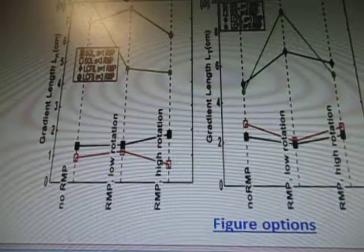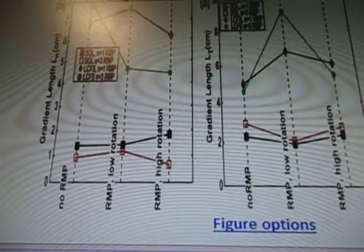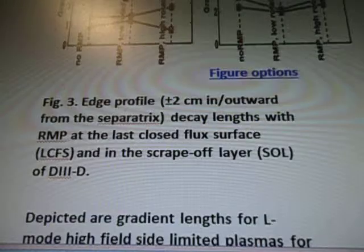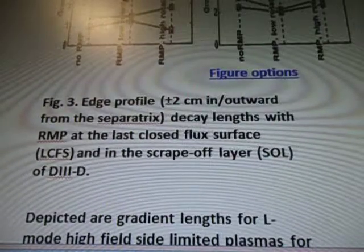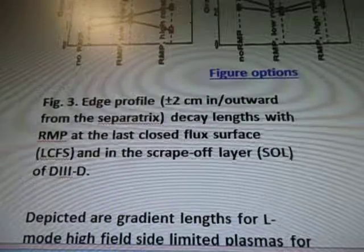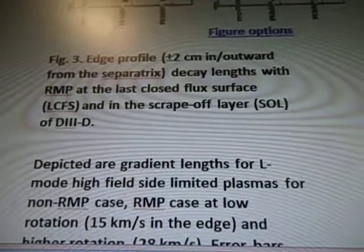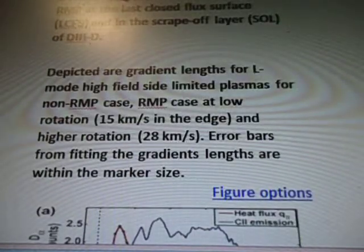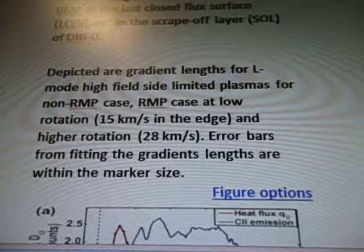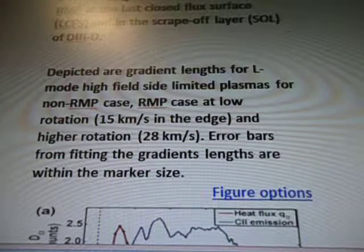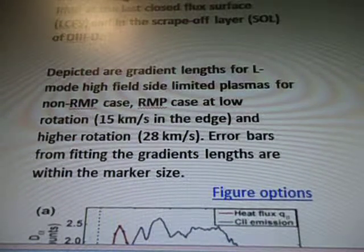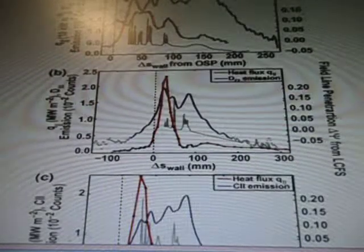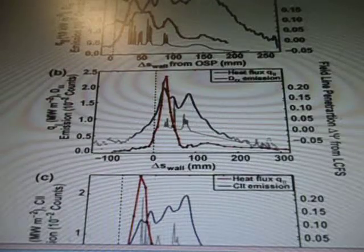So here's more diagrams. Gradient length — no RMP, RMP low rotation, RMP high rotation — kind of got a triangle thing. Edge profile plus/minus 2 centimeters outward from the separatrix, decay lengths with RMP at the last closed flux surface LCFS, and the scrape-off layer SOL of D3-D. Depicted are gradient lengths for L mode high-field-side limited plasmas for non-RMP case, RMP case at low rotation 15 km/s in the edge, and higher rotation at 20 km/s. Error bars from fitting the gradient lengths are within the marker size. Then we got emissions — 10 to the power of minus 2 counts with some other formula there.